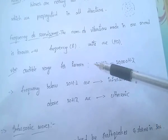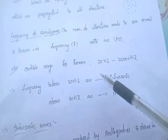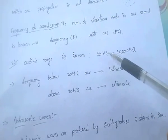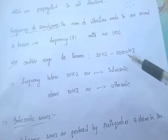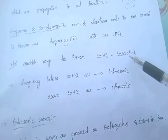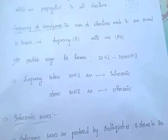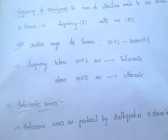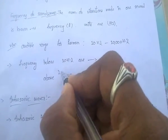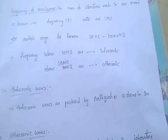Below 20 Hz, humans cannot hear — these are known as infrasonics. Above 20,000 Hz, humans also cannot hear — those waves are known as ultrasonics. So, frequencies below 20 Hz are infrasonic, and frequencies above 20,000 Hz are ultrasonic.